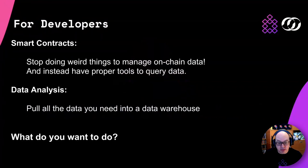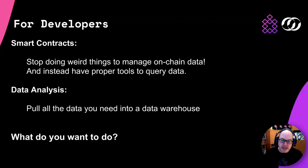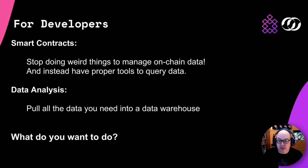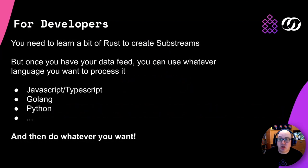What does this mean for developers? From smart contracts, we can stop doing workarounds to manage on-chain data — now that we have a proper query engine in Firehose and Substreams, smart contract development becomes easier. For the data analysis crowd, you can take all this data and throw it in a data warehouse — that will work really, really well. Then you can do AI and machine learning applications based on your Firehose data. Really, the future is open: what do you want to do with Firehose and Substreams?